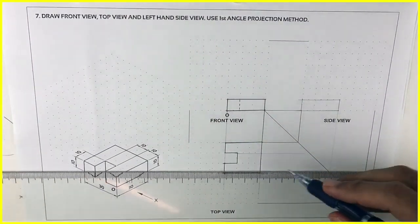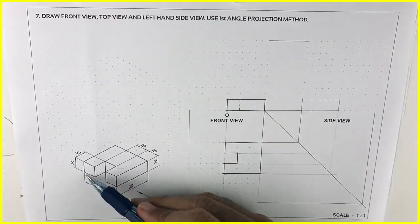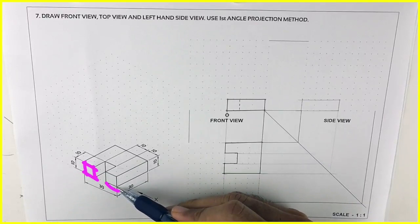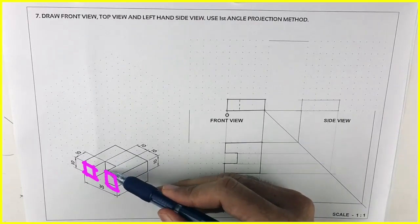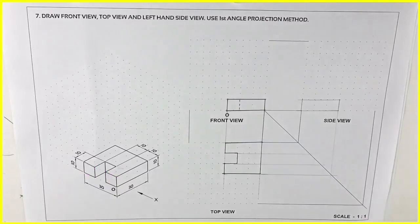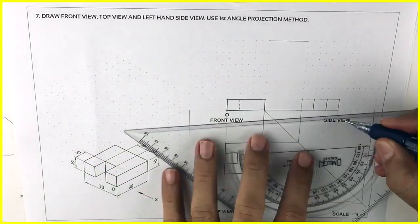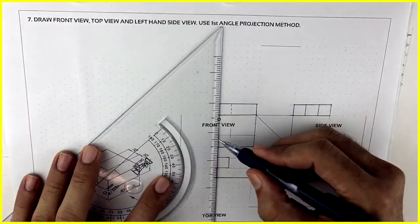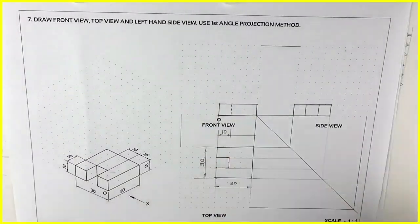Now for side view, you will see from here. We can see this rectangle, another rectangle, and third rectangle. So when you take it from top view, you will see three rectangles in side view. Draw that. After that, you do dimensioning. Thank you.